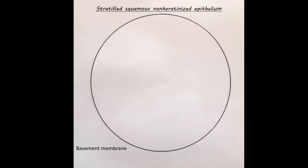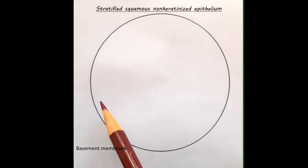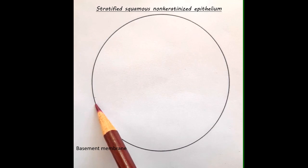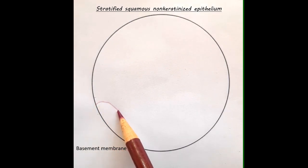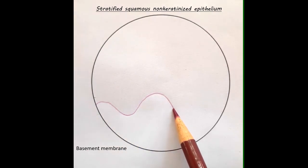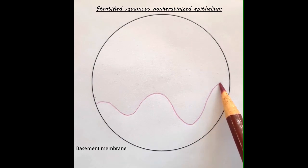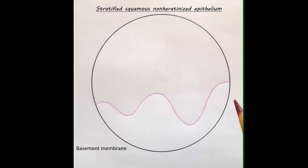Let us start from the basement membrane. Unlike the other epithelia, here the basement membrane is drawn in a bumpy fashion with its ups and downs. Again, up and down. So this is the basement membrane.